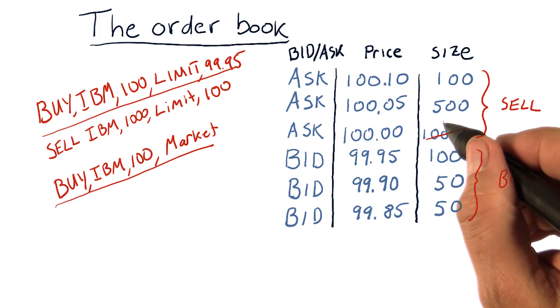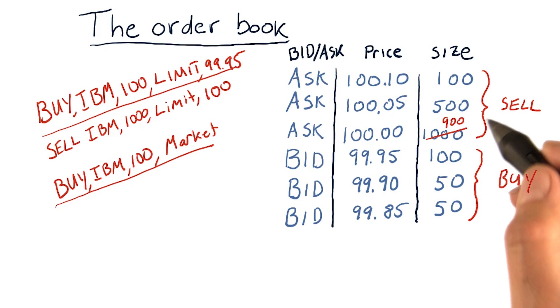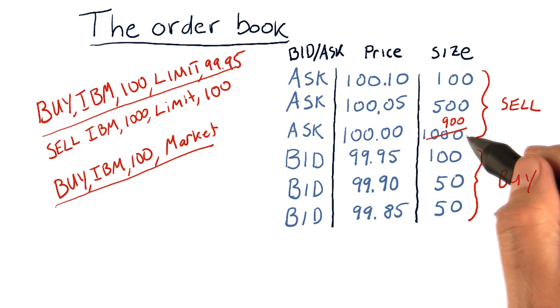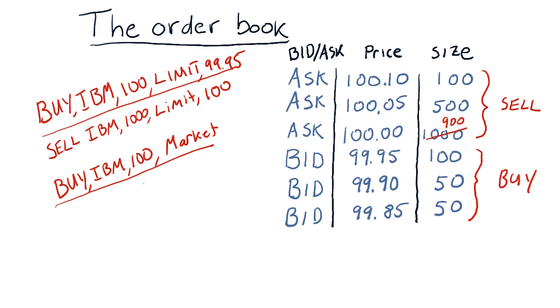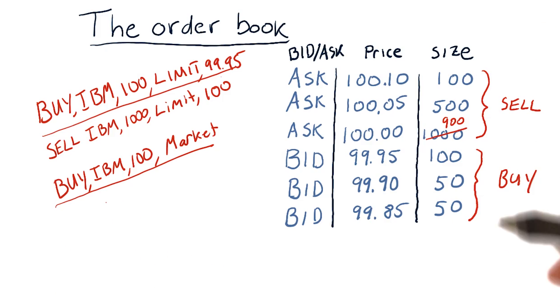That means now we've only got 900 shares left. We take that 100 and give it to the client who put in the order, and this is the state of our order book after that transaction.